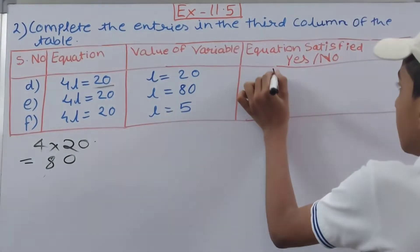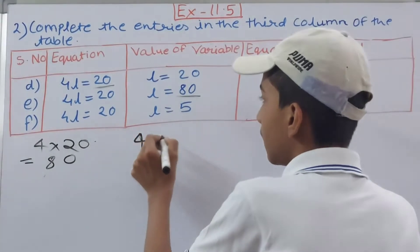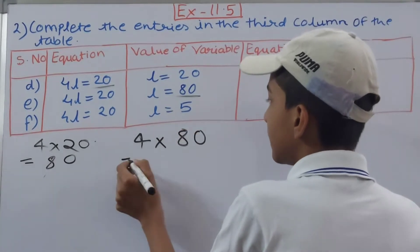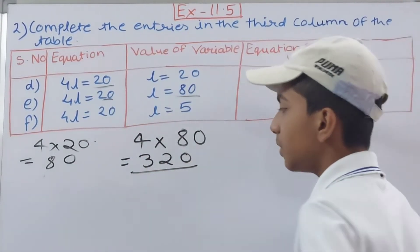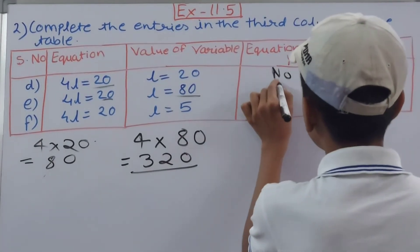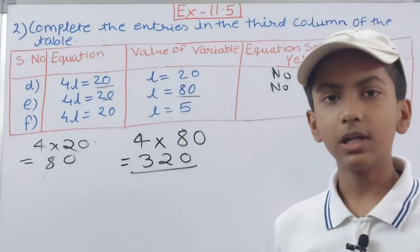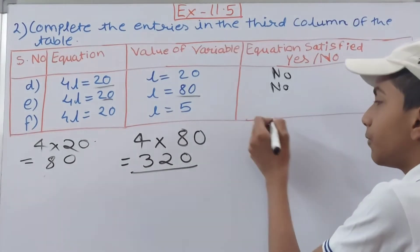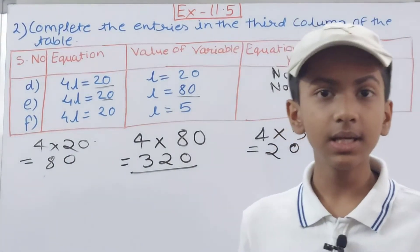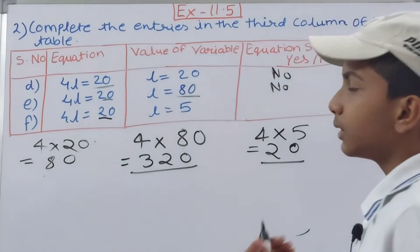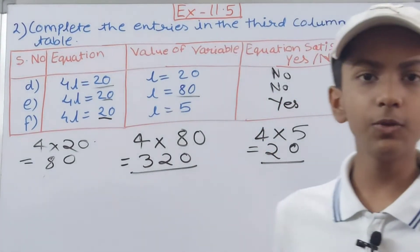Same equation 4l = 20, now l = 80. So 4 × 80 = 320. The RHS is 20 but LHS is 320 — not equal, equation not satisfied — No. Then l = 5: 4 × 5 = 20. The LHS is 20 and the RHS is also 20, so both sides are equal — equation is satisfied — Yes.